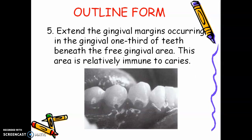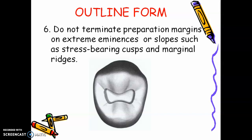Extend the gingival margins occurring in the gingival one-third of teeth beneath the free gingival area — this area is relatively immune to caries. Class 5 caries are very common in patients with poor oral hygiene. Do not terminate preparation margins on extreme eminences or slopes such as stress-bearing cusps and marginal ridges. The cusp and marginal ridge are stress-bearing areas, so the preparation should not extend there — or else during mastication, the tooth or the restoration will fracture. We will continue with the second step in the next video.